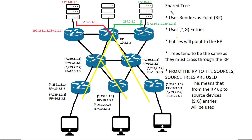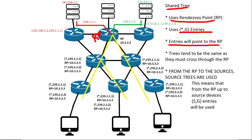Now when you're using share trees, you will be using a rendezvous point. In this network, this router is the rendezvous point. These trees will use *,G entries, and the entries will point to the rendezvous point. In this case, the trees tend to be the same as they must cross through the rendezvous point.